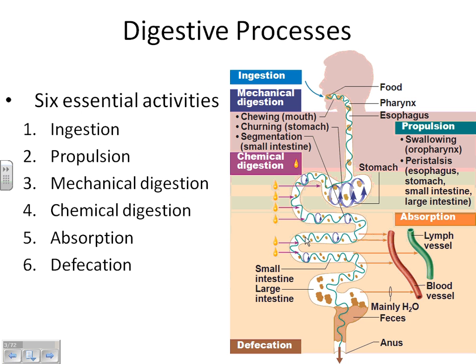What we're going to focus on in class is the physiological functions. When you sit down to study, you should be able to look at all six activities and understand exactly what they mean and where they're occurring. Ingestion obviously occurs in your mouth. Defecation only happens at the anus. The other four can happen in more than one place, and those are the ones you're probably not 100% sure of just by looking at the terms.